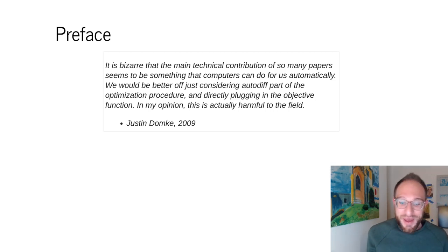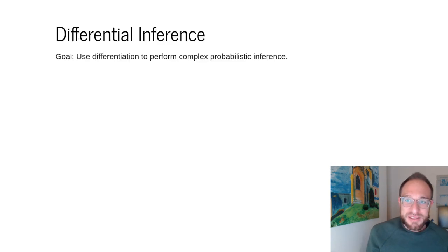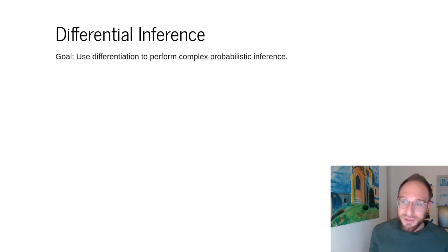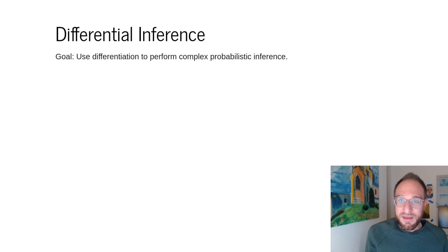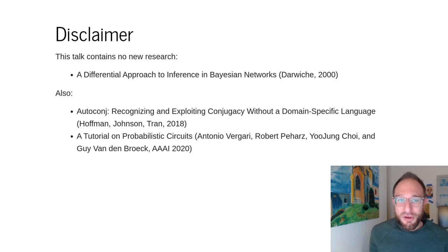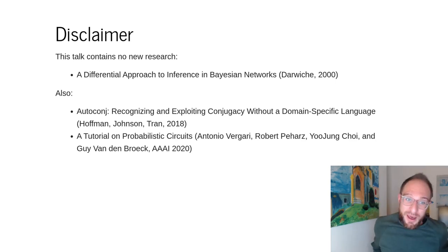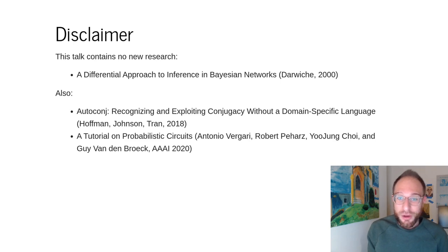Obviously we've come around on autodifferentiation, but today's talk notes that we mostly use it for parameters, and differential inference is still underused. When we talk about using differentiation to perform complex probabilistic inference, it still feels like there could be much more said and done to make these tools effective in practical use. Today's talk revisits some papers — I want to note it contains no new research at all. My main work is in natural language processing, and for this talk I'm providing code for a differential approach to inference in Bayesian networks.